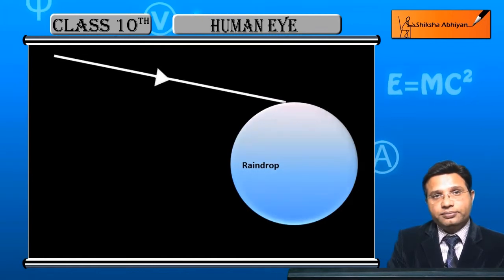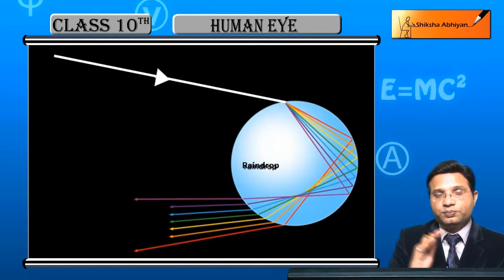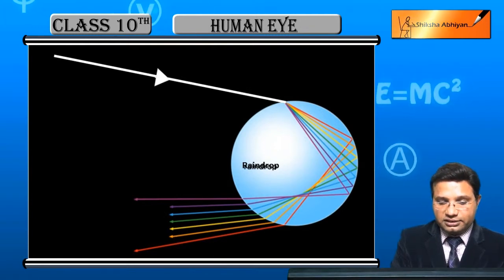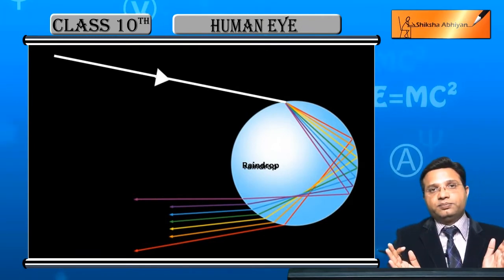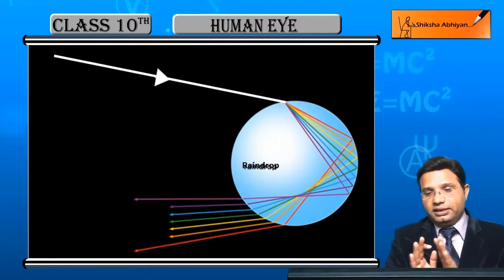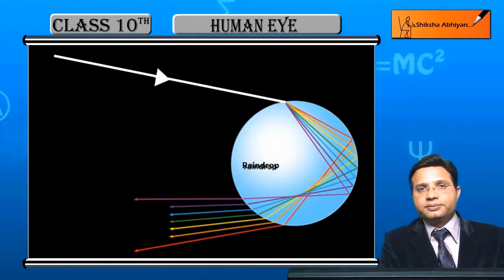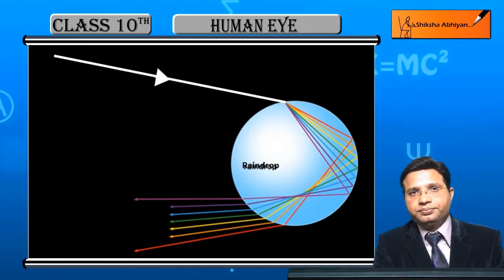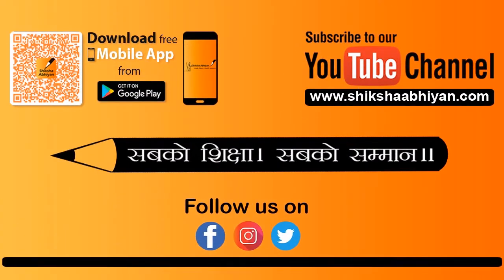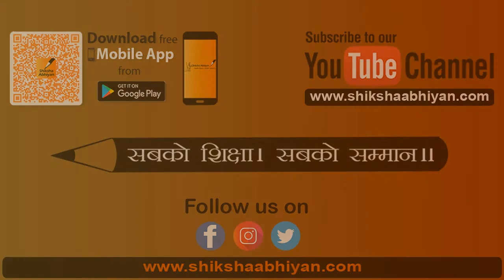In the animation, you can see: incident light disperses into colors, total internal reflection occurs, and then the light refracts out. For the exam diagram, you need to show the rainbow arc shape; you don't need to draw all seven colors — showing red and violet is sufficient.